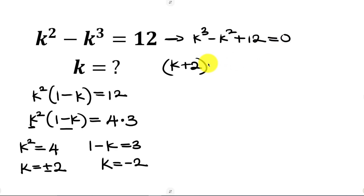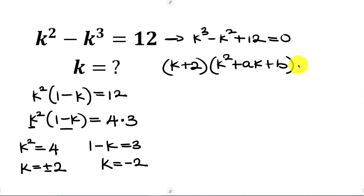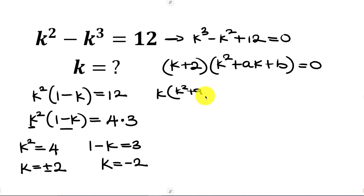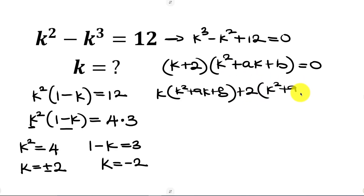Now let's find the other factor. The other factor is going to be a quadratic equation: k squared plus ak plus b, close bracket, equal to zero. We can get the values of a and b by first expanding the expression, so we expand k times k squared plus ak plus b, and then plus 2 times k squared plus ak plus b.